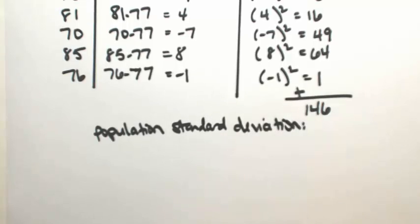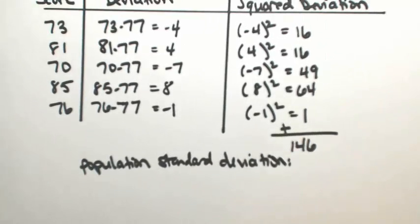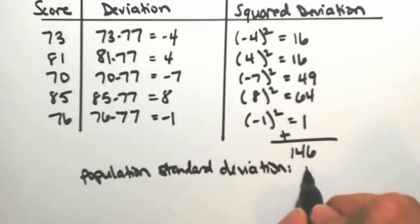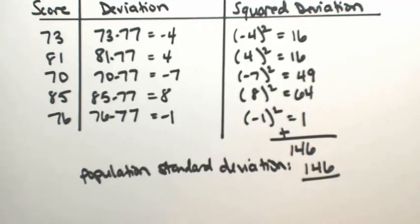So with a population standard deviation, we're literally just going to take the average of the squared deviation. So we're going to do 146 divided by the number of values, which is 5.